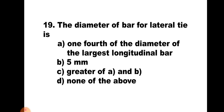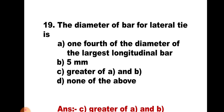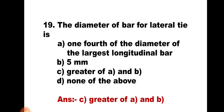Question number 19. The diameter of bar for lateral ties is: A) one-fourth of the diameter of the largest longitudinal bar, B) 5 mm, C) greater of A and B, or D) none of the above. As per IS 456, the diameter for lateral ties is calculated from two parameters: one-fourth of the diameter of the largest longitudinal bar, and 5 mm, whichever is greater. Hence the correct answer is C, greater of A and B.